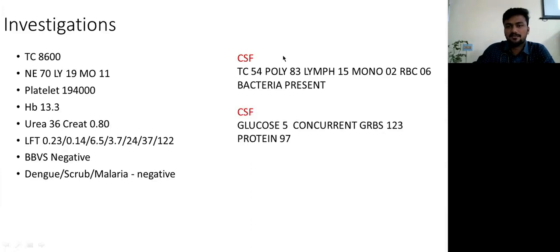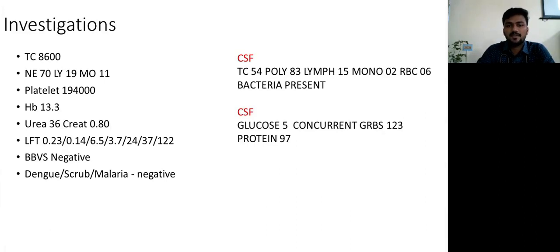CSF was done: it showed total counts of 54 with lymphocytes of 83% and bacteria were present on direct examination. CSF biochemistry revealed glucose of 5 with concurrent random blood glucose of 123 and protein of 97.